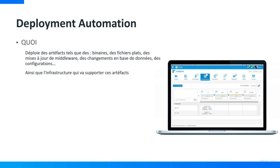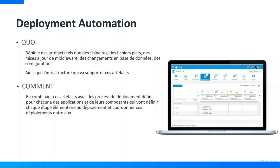Que fait Deployment Automation ? Il va déployer vos applications, qu'elles soient constituées de fichiers binaires, de fichiers plats, de mises à jour de middleware, de changements de base de données, de mises à jour de configuration. Toutes ces opérations peuvent être automatisées via Deployment Automation. On va également automatiser le déploiement de l'infrastructure qui va supporter les applications. Ces opérations s'effectuent via du paramétrage de process de déploiement — une logique dans laquelle vous définissez toutes les étapes élémentaires : tester l'existence d'un service, le démarrer, copier un fichier, déployer un conteneur.